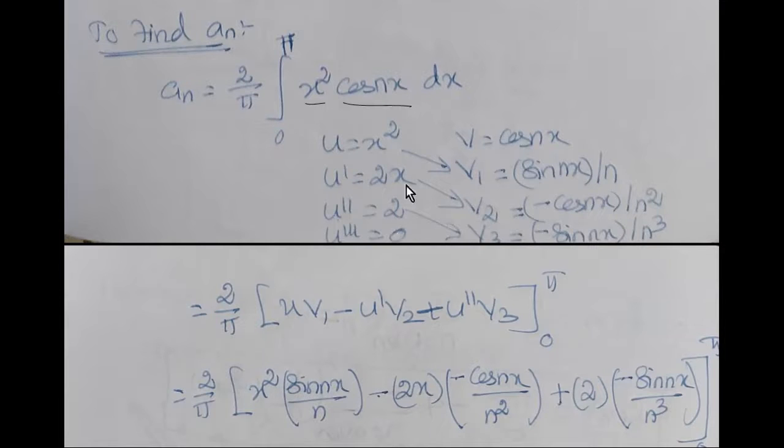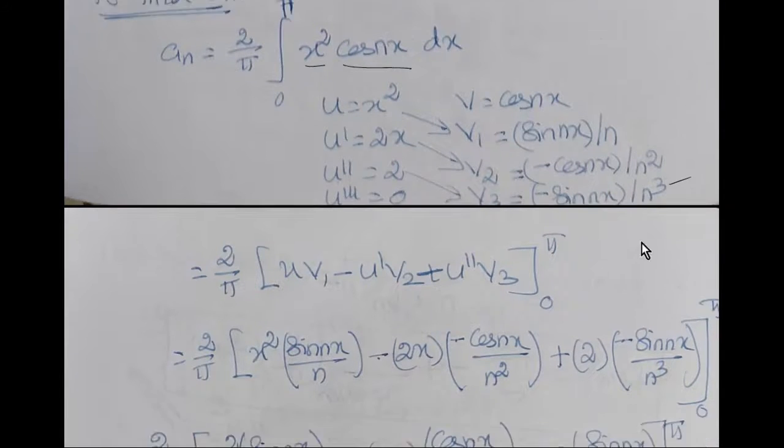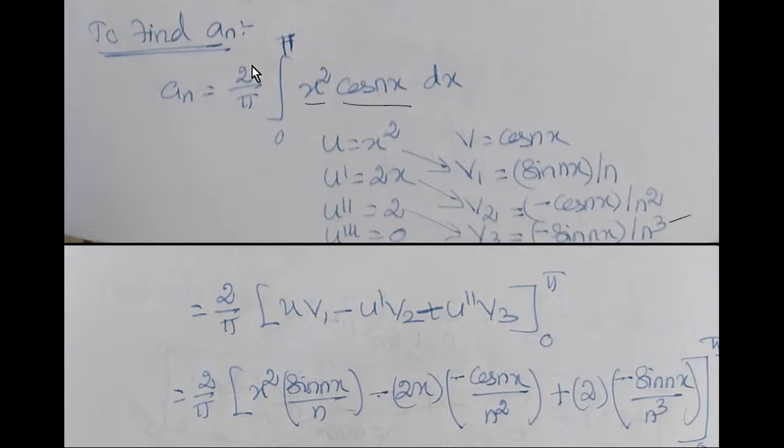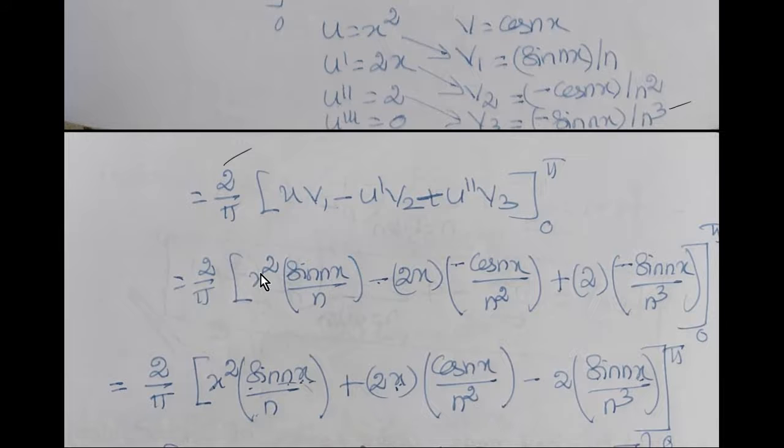Three times differentiate, three times integrate V. Cos integrate is sin nx by n, then integrate is minus cos nx by n squared. x squared sin nx by n minus 2x times minus cos nx by n squared plus 2 times minus sin nx by n cubed.